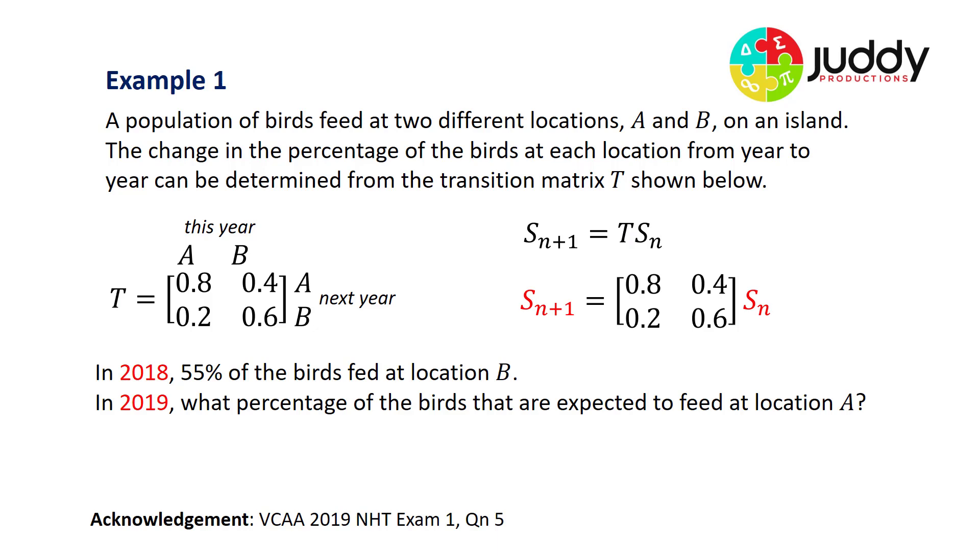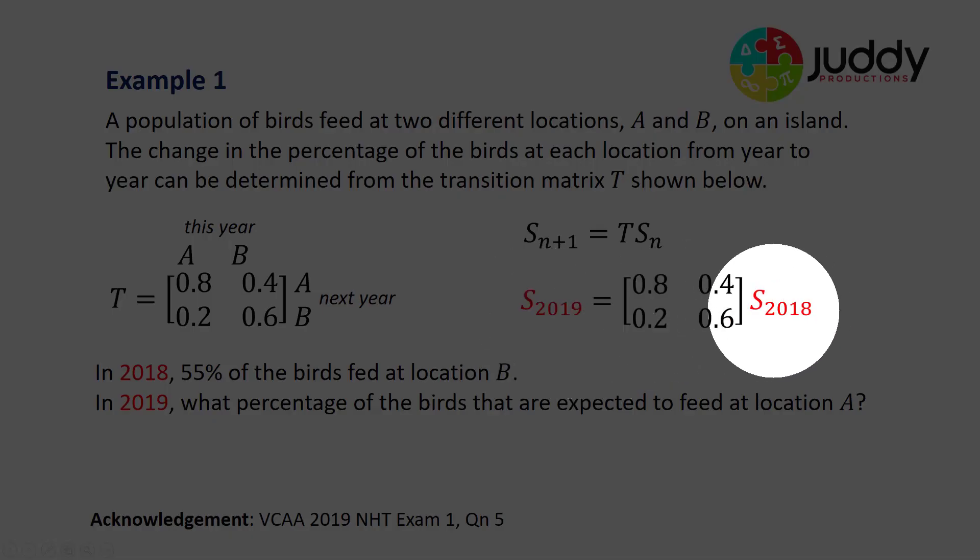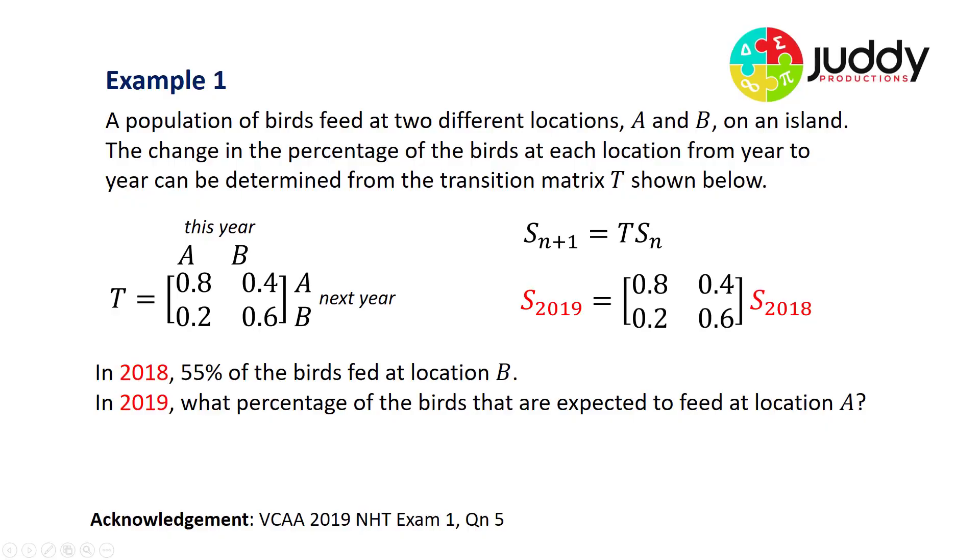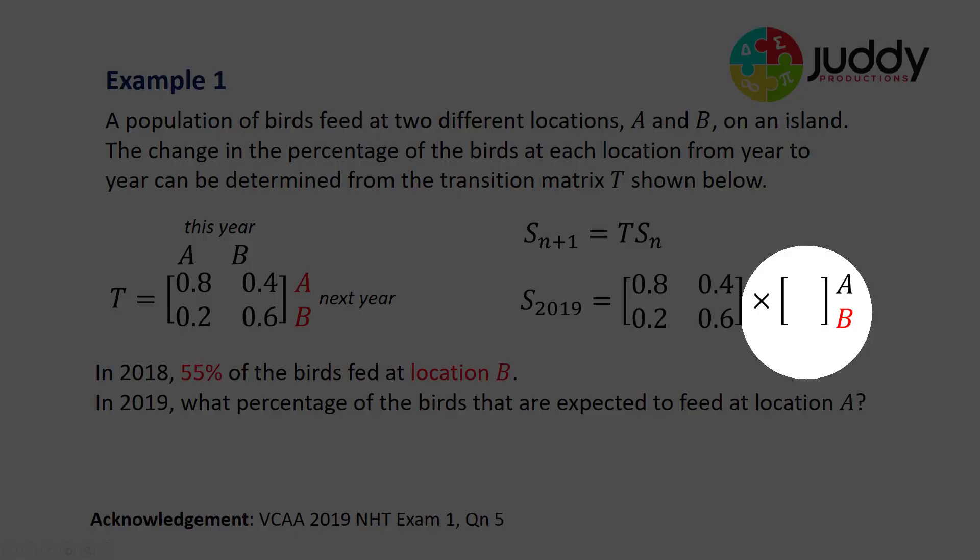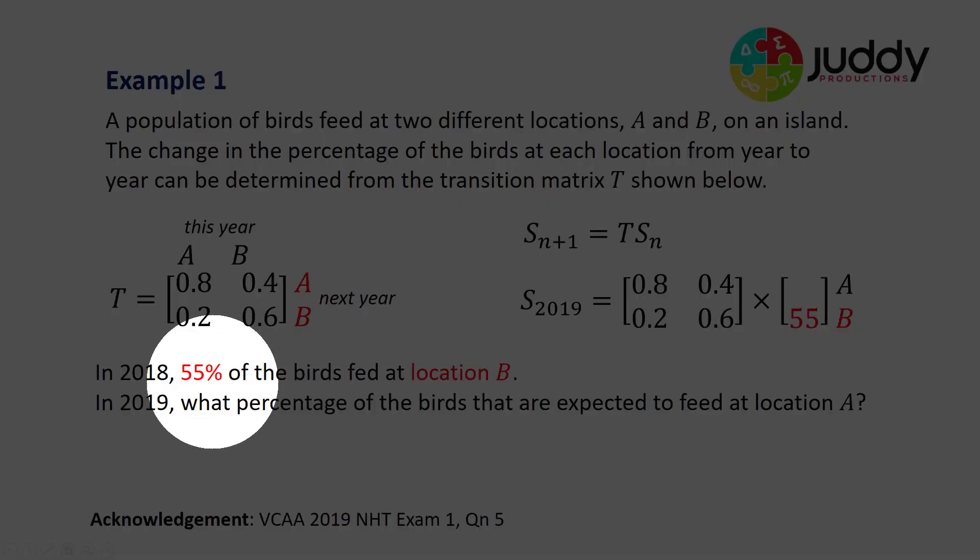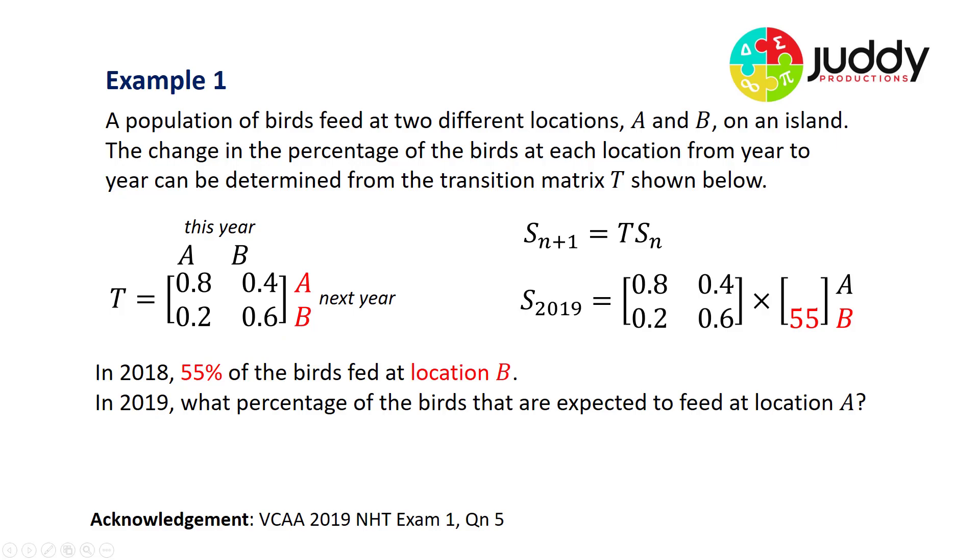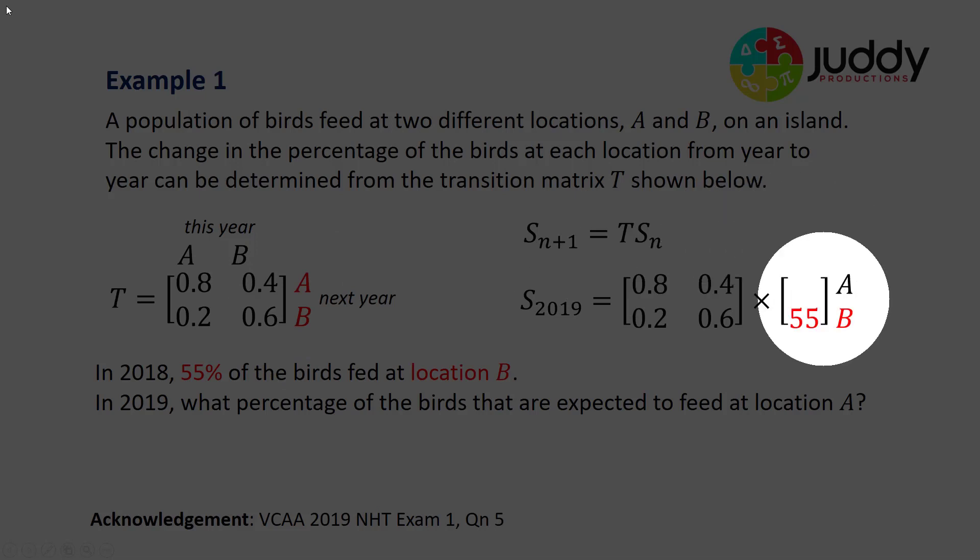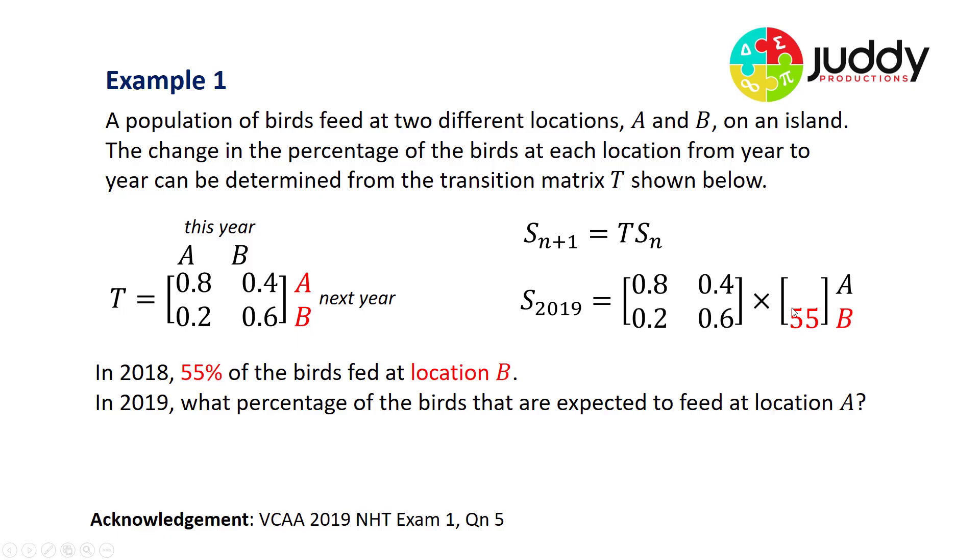Next we look at the previous state and the next state. We're looking at moving from state of 2018 to the next state of 2019. Let's substitute in the data we have for 2018. We're told that 55% of the birds feed at location B. Notice that we have A and B here in our matrix in order, A at the top and B at the bottom. Accordingly, when we go to our 2018 matrix, we have data A at the top and data B at the bottom.